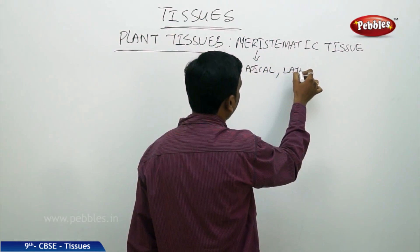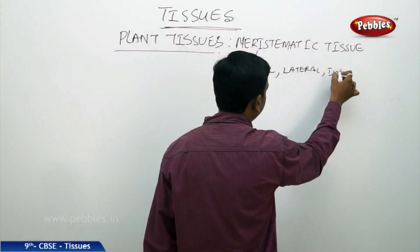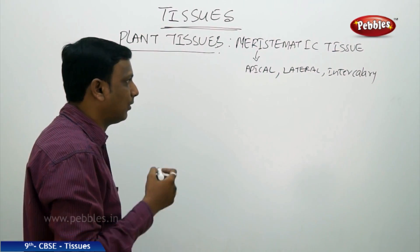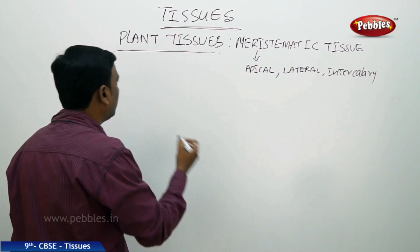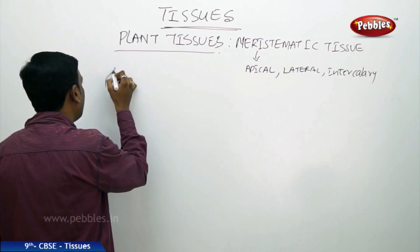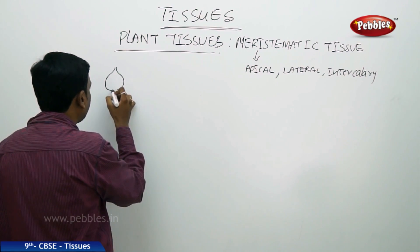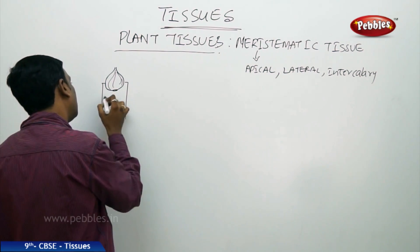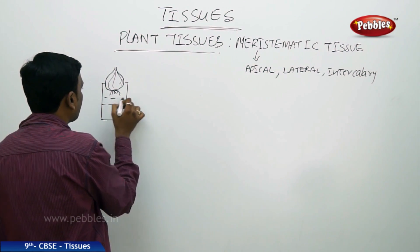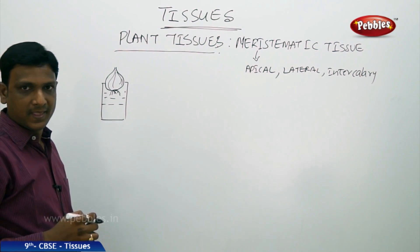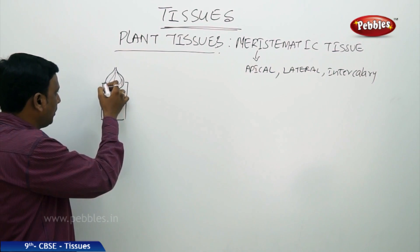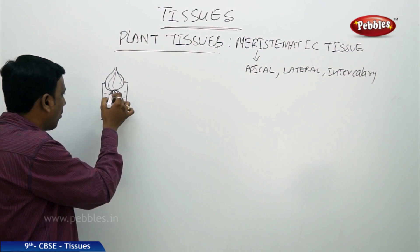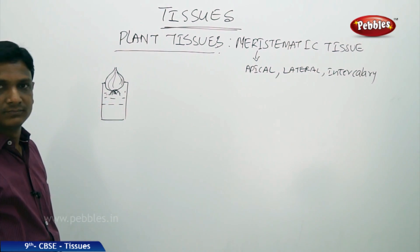Let us see what apical, lateral, and intercalary meristems are, and their location in a plant. Before that, let us observe an activity to understand the prominence of meristematic tissue. We have taken an onion bulb and kept it in a bottle with water, with the roots touching the water.